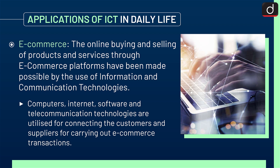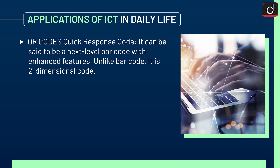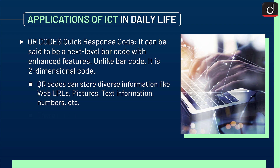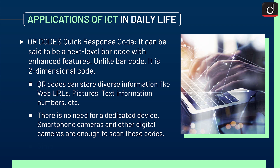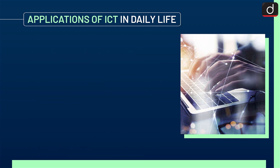Computers, internet, software and telecommunication technologies are utilized for connecting customers and suppliers for carrying out e-commerce transactions. Next is the QR code, or Quick Response code, which can be considered a next-level barcode with enhanced features. Unlike a barcode, it is a two-dimensional code. QR codes can store diverse information like web URLs, pictures, text information, numbers, etc. There is no need for a dedicated device — smartphone cameras and other digital cameras are enough to scan these codes, and simple, easily installable software translates the barcode into the information coded into it.